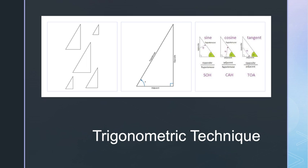Besides the Pythagorean theorem, there are other relationships between the sides and angles of a right triangle. If we know the lengths of any two sides, we can determine the length of the other side and the size of the angle. Conversely, if we know one angle other than the right angle, we can determine the other sides and angles using trigonometry. Trigonometry tells us that a ratio exists among the lengths of the sides of right triangles that have similar angles. These relationships — sine, cosine, and tangent — are used to determine the length of an unknown side if one side and one of the non-90-degree angles are known.